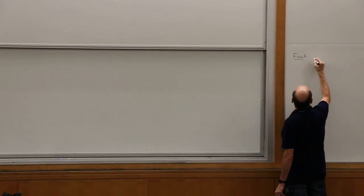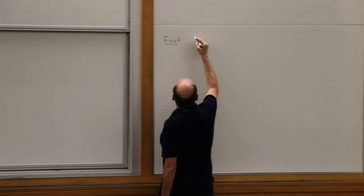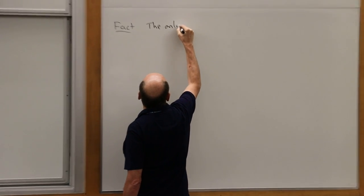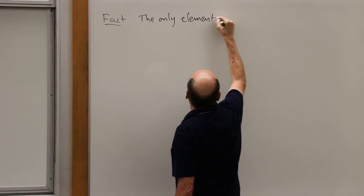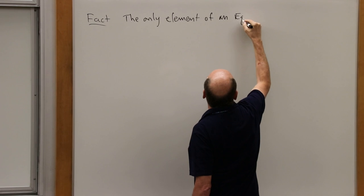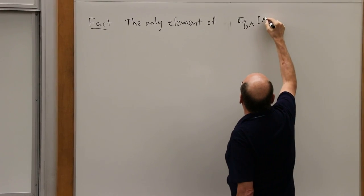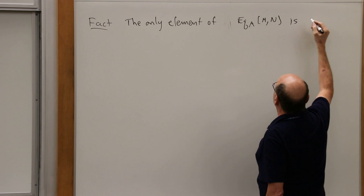The other basic fact is that the only element of an equality type — say of EQ_A of M1, M2 — is star. In other words, if you know that M is in the equality type, then M has to be equal to star. This is directly from the definition.